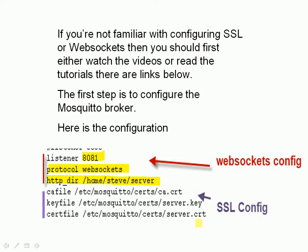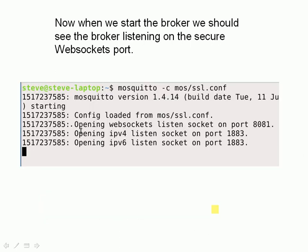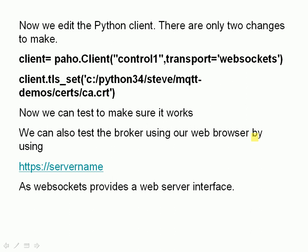Here is the configuration for setting up SSL — as I say, that's covered in the setting up SSL on Mosquitto video and tutorial. We start the broker and we can see it's listening on port 8081, which is the WebSockets and SSL port combined. We then make some simple changes to the Python client: all we do is add these two lines — tell it to use WebSockets and tell it to use the certificate.